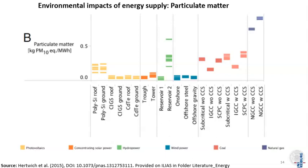Another visualization measures particulate matter in kilograms of PM10 equivalents per megawatt hour of electricity generated. Again, there is a wide range, but renewable energies tend to score lower on this indicator than coal technologies and natural gas. This reinforces the good message: we have a triple benefit — renewable energy, low carbon, and low air pollution.